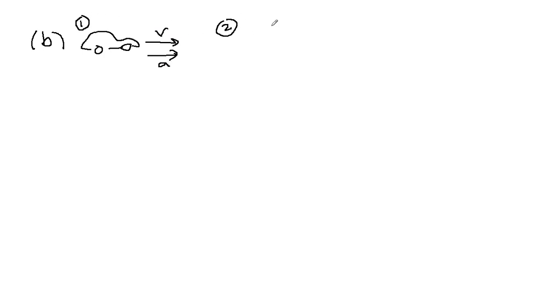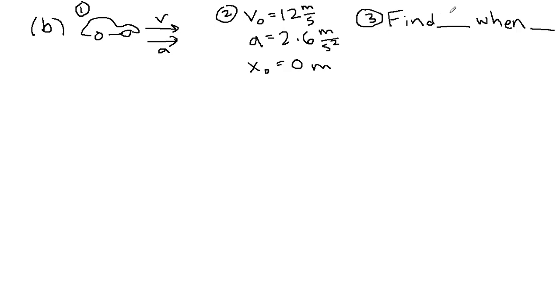Step two is the given information. When we were looking at the car at the very beginning, it's still moving 12 meters per second. The acceleration is still 2.6 meters per second squared. And we're still going to choose to start at zero meters for convenience. This is the big check now. If you can, try pausing the video and filling in these blanks yourself. What are we trying to find and when are we trying to find it?